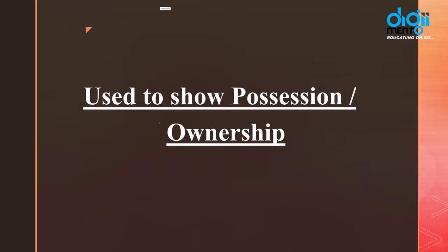Ab hum baat karne waale hain un conditions ki, un situations ki jahaan par hum 'has' aur 'have' ko use karte hain as a main verb. 'Had' isliye likha hai kyunki past tense mein ya perfect tense ke case mein woh 'had' ban jaata hai, but normally we use it as 'has' or 'have'. So the first condition is: it is used to show possession or ownership.